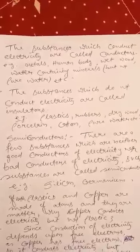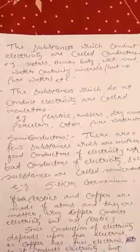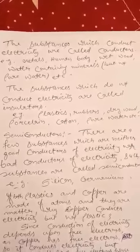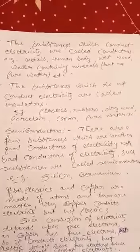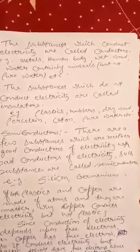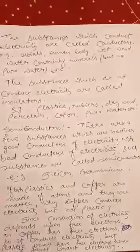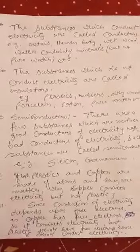The substances which do not conduct electricity are called insulators. For example, plastics, rubber, dry wood, porcelain, cotton, and pure water.